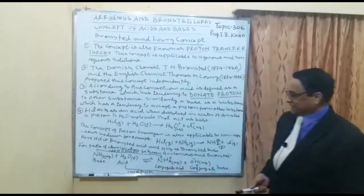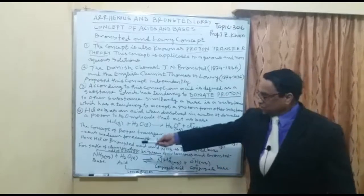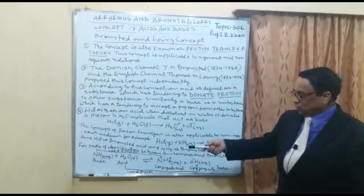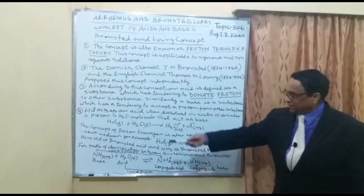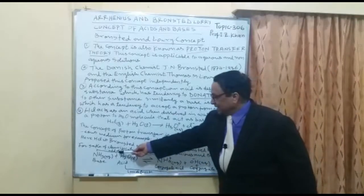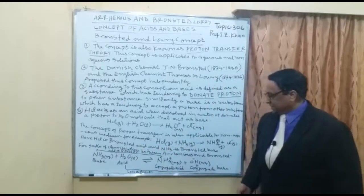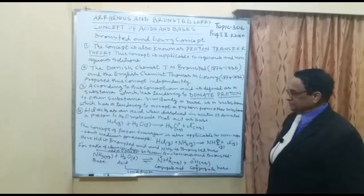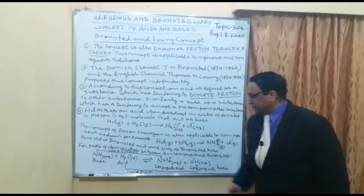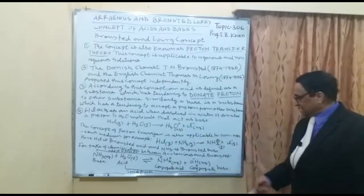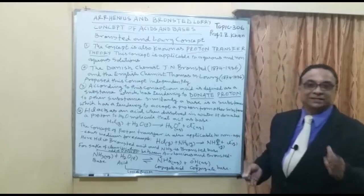For clarification between the Arrhenius and Bronsted concepts: NH3(aq) plus H2O(l) in equilibrium gives NH4⁺(aq) plus OH⁻(aq). Here, addition of a proton to NH3 gives NH4⁺, which acts as the conjugate acid, and NH3 acts as the base. Water loses a proton, so it acts as the acid, and OH⁻, which gains the proton, acts as the conjugate base. That is why there is the conjugate acid-base pair.